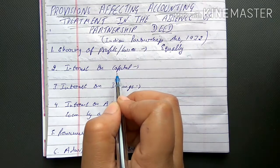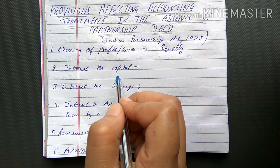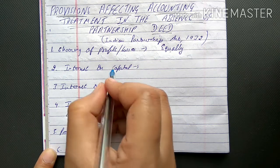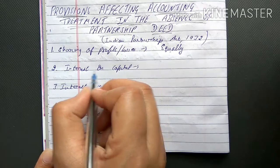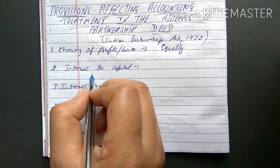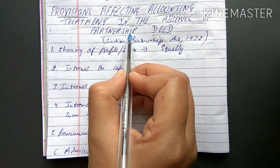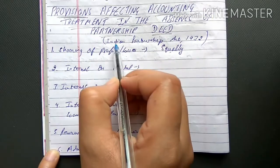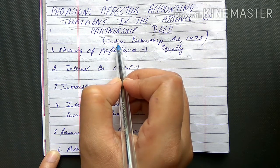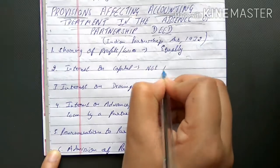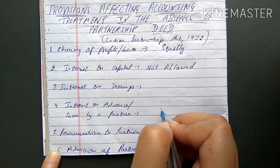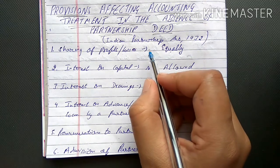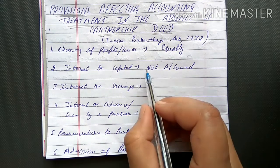The second provision is interest on capital. Capital refers to the amount of money each partner brought and invested when starting the business. Partners sometimes demand interest on their capital from the firm. If a deed was made specifying 10% or 20% interest, it must be paid. But in the absence of a deed, the Indian Partnership Act 1932 states that no interest on capital will be given to any partner — it is not allowed.